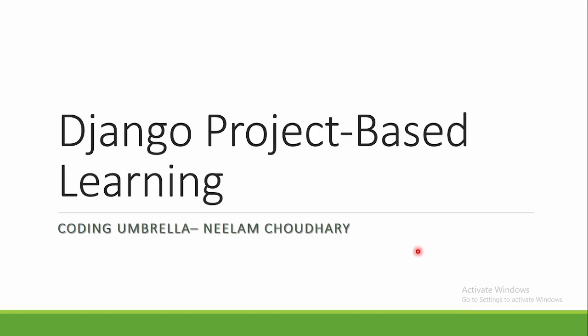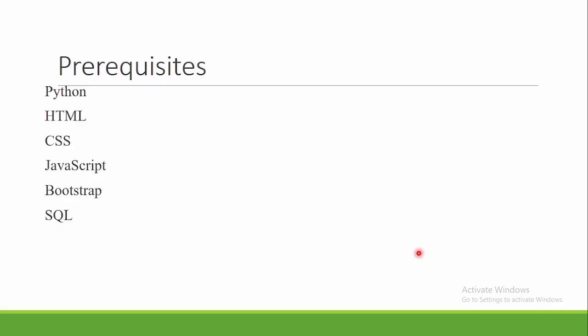Now, to get started with Django, there are a few things you should know. First, having a basic understanding of Python is necessary. This includes things like syntax, indentations, and you should also be familiar with concepts like functions, loops, classes, and objects.